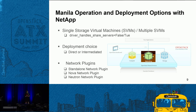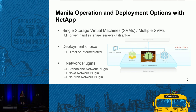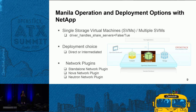For Manila operation with NetApp, there's a Boolean variable called driver_handles_share_servers set in the Manila config file. If set to true, the driver handles share servers; if false, it doesn't. For deployment choices with NetApp you have two options: direct, where the Manila driver talks directly to NetApp FAS storage, or intermediated, where a software entity in the middle takes commands from the Manila driver and passes them to FAS, AFF, or other NetApp storage. Network plugin options include standalone, Nova network, and Neutron — each supporting the segmentation that network supports, such as VLAN segmentation with Neutron.